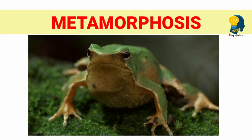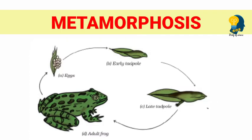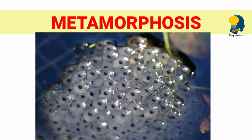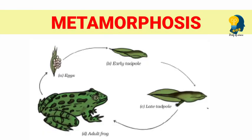Let's take an example of the life cycle of the frog. It consists of many stages. The egg forms the first stage in the life cycle of the frog. These eggs fuse with the sperm to form the embryo, and this happens in the water.